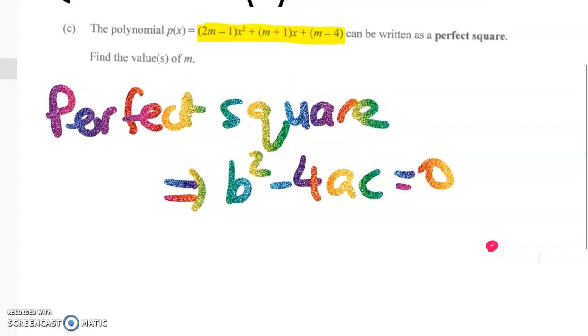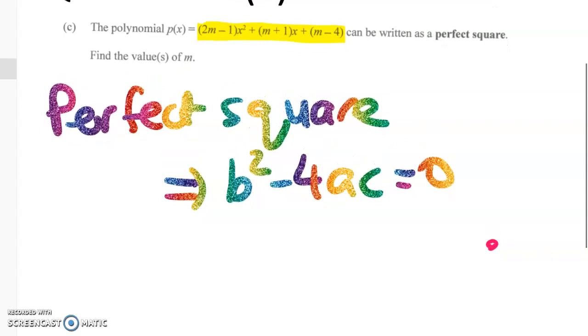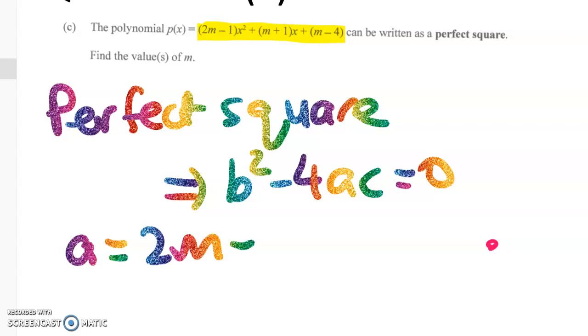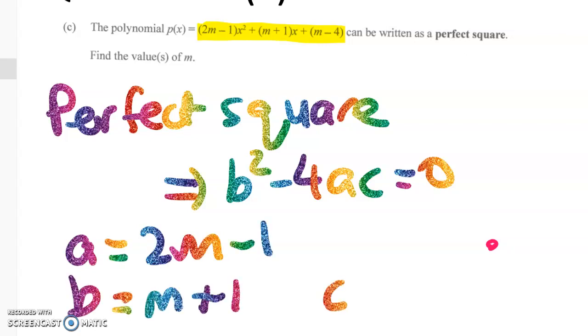This is one where we're given a, b, and c very clearly. So a is 2m minus 1, b is m plus 1, and c is m minus 4.